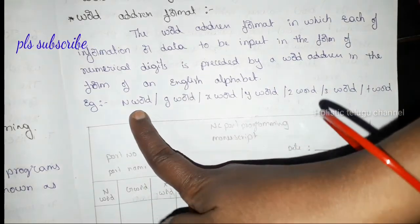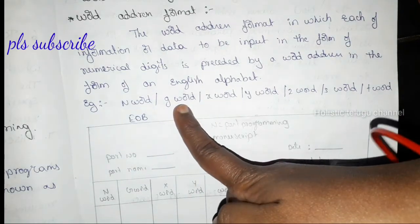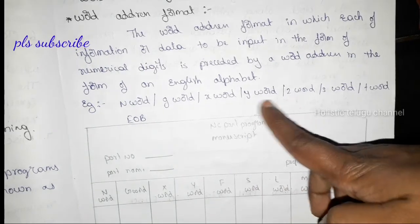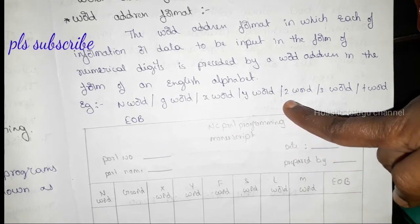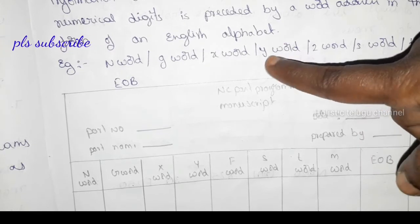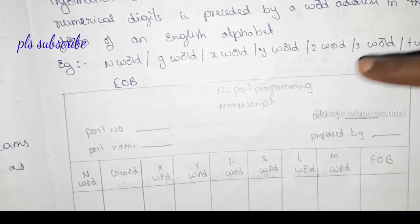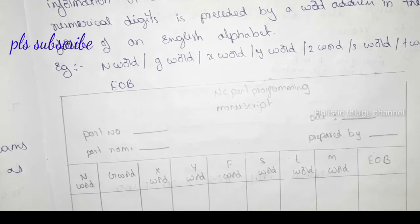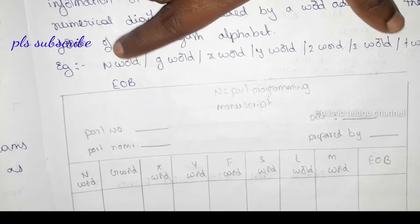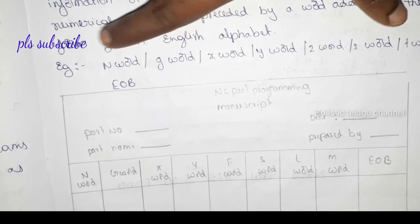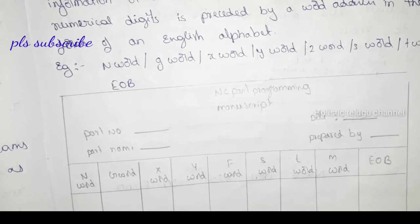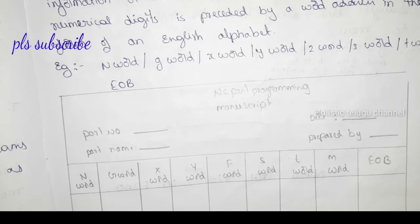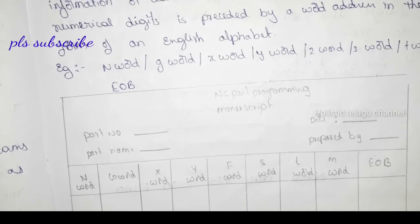Let's look at an example of the word address format. N-word is compulsory, followed by G-word. Then the coordinates X, Y, Z — the direction of movement. Then S, T, E, O, B words. Each and every piece of information is arranged in the correct format. In any step, we can see the word address format in this way.